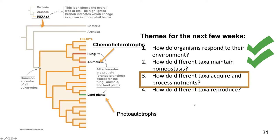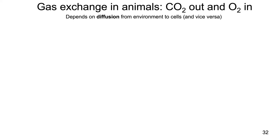This lecture will be our last in our series on how different taxa acquire and process nutrients. Next we'll be talking about how different taxa reproduce. But I want to pick up where I left off talking about chemoheterotrophs and specifically animals, and now talk about other important nutrients that animals and any organism that does cellular respiration needs — and that would be gases.